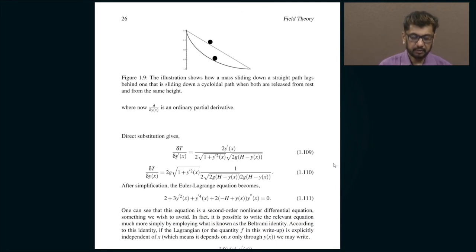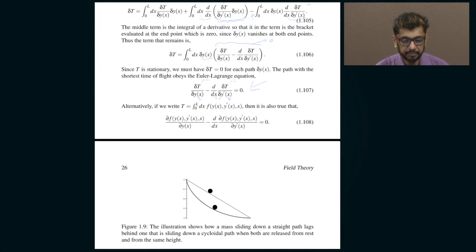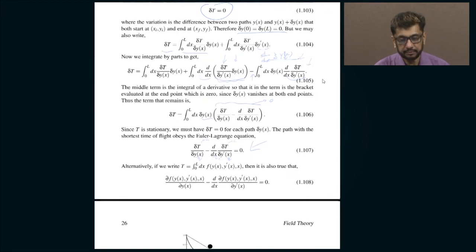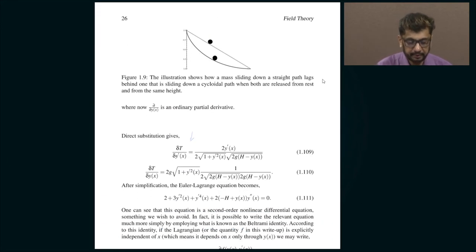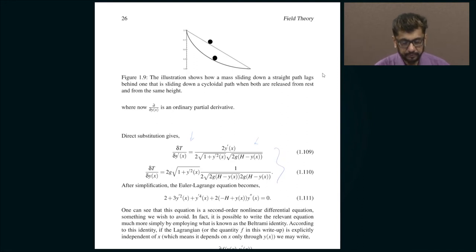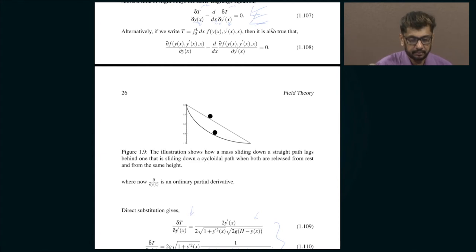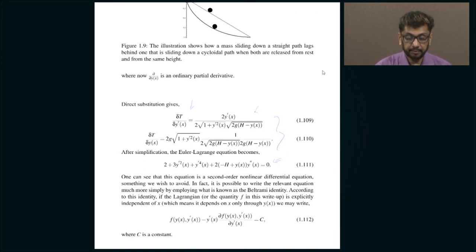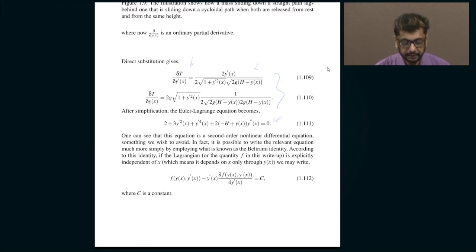Now let us work this out. δT/δy' and δT/δy can be computed by treating y and y' as two independent variables, since we now know what T is. Substituting these two derivatives into the Euler-Lagrange equation gives the equation that y(x) must obey in order for T to be minimum. There are some technical issues which mean we can avoid the resulting second-order equation, which is somewhat complicated to deal with.